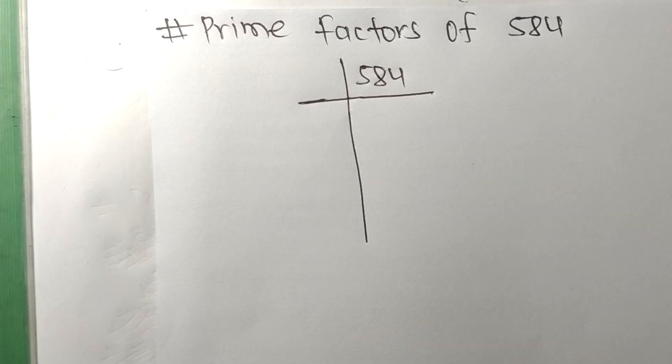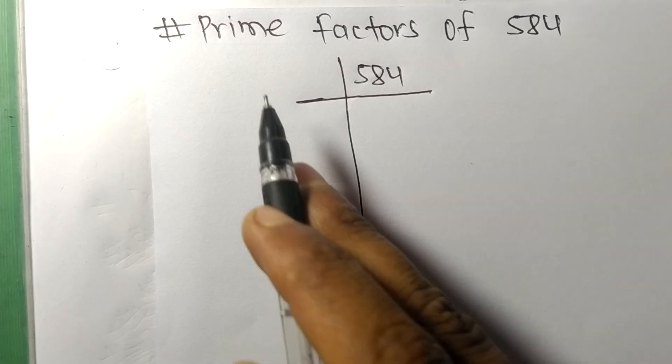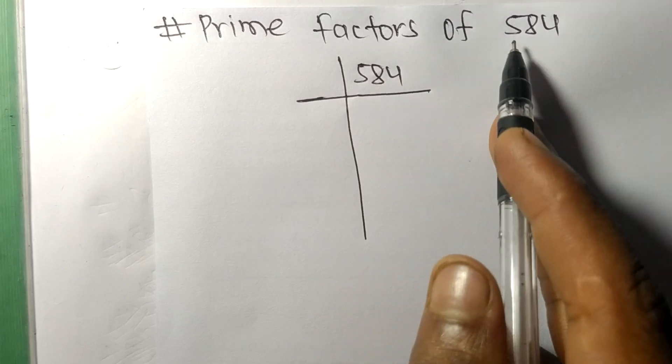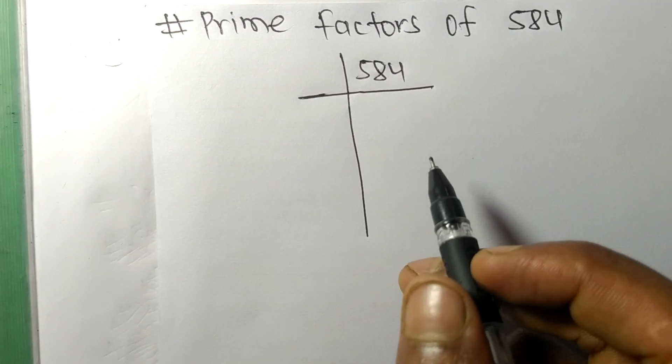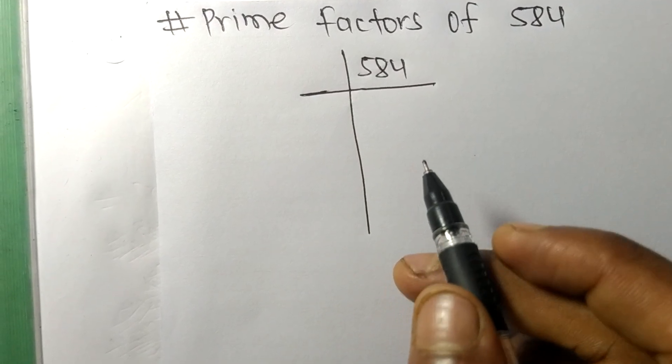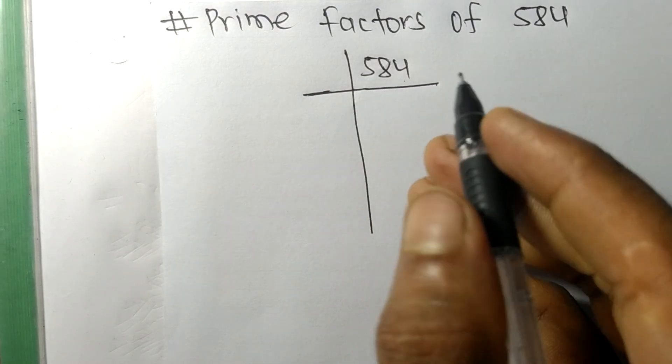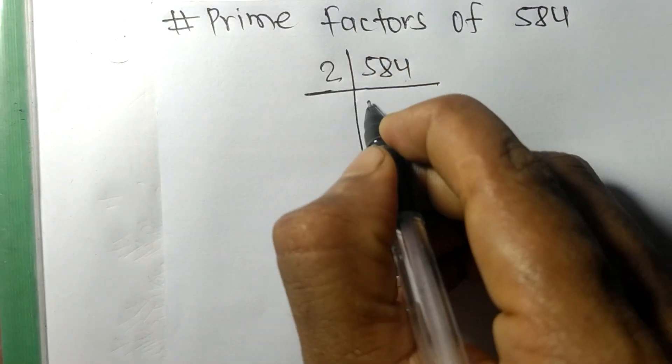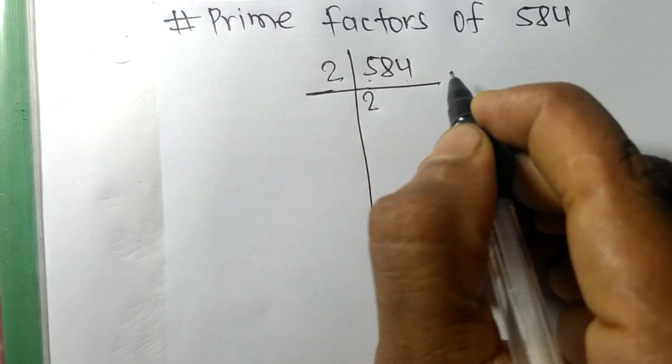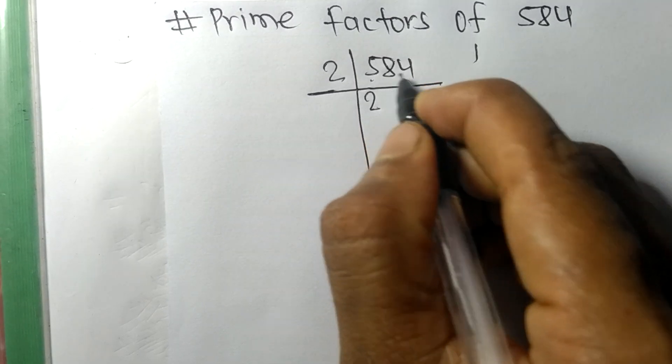Today in this video we shall learn to find the prime factors of 584. At last it contains an even number 4, so the whole number is divisible by 2. 2 times 2 is 4, remainder 1 and 8, 18. 2 times 9 is 18, and 2 times 2 is 4.